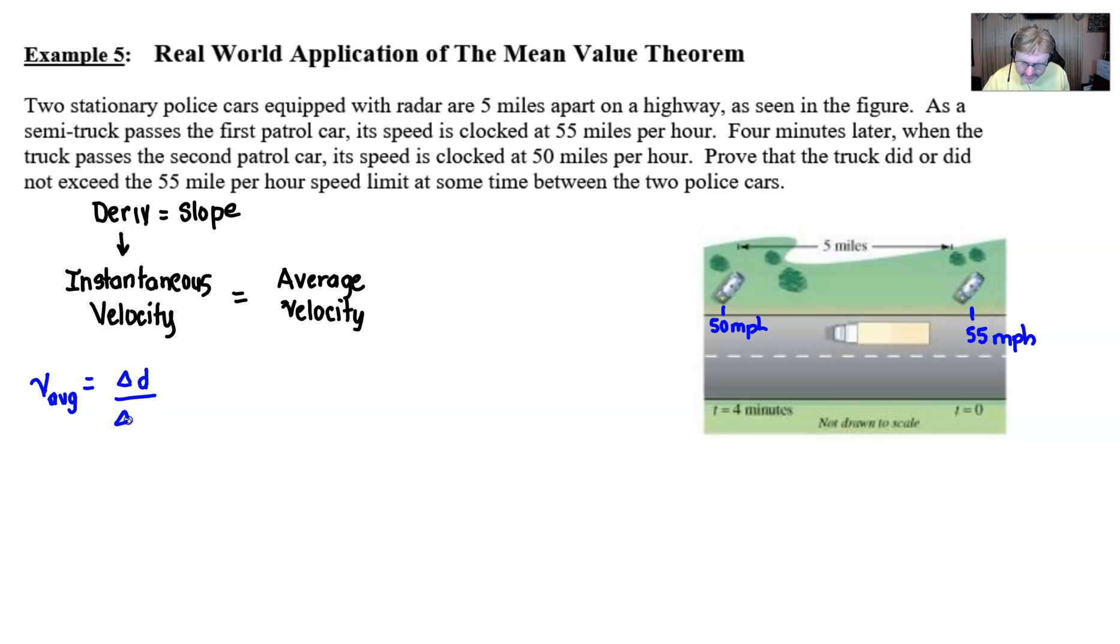So for our average velocity, we're going to simply take the change in distance and divide it by the change in time. In this particular case, the change in distance would be the amount of position that this truck had accumulated between those two points. And as you can see up here, that would be five miles.